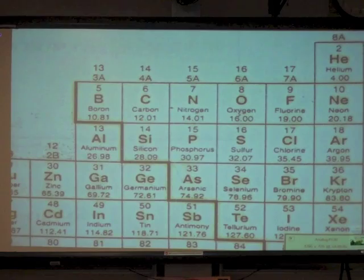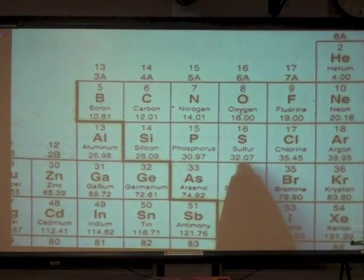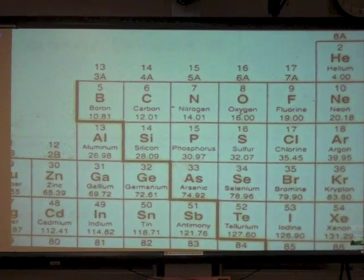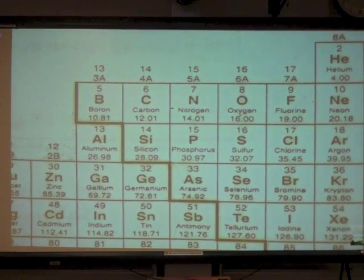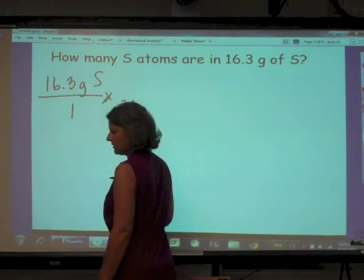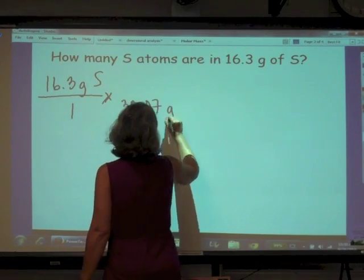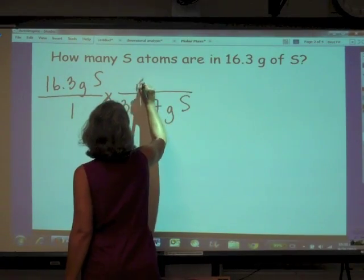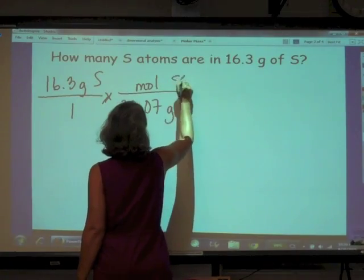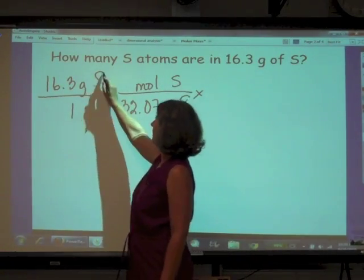The periodic table to tell us the molar mass. Here is sulfur and it is 32.07 grams per mole. 32.07 grams of sulfur for every mole of sulfur. So our grams now will cancel.